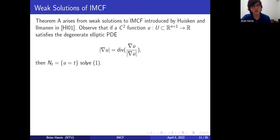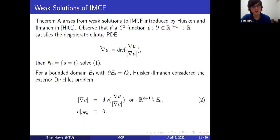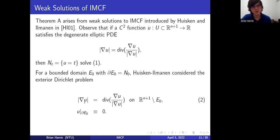What Huisken and Ilmanen did in their proof of the Riemannian Penrose inequality is they said: if you have some bounded domain in ℝⁿ⁺¹ and you want to think about the inverse mean curvature flow of its boundary, consider the following elliptic Dirichlet problem. You want to solve this PDE on the exterior region to E₀ with the boundary condition that it's zero over the boundary of E₀.